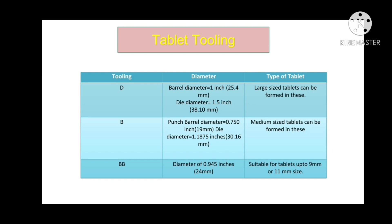Tooling used in tablet preparation is of three types — D, B, and BB — depending upon the type of tablet we want to prepare. Starting with D tooling: the barrel diameter is 1 inch, the die diameter is 1.5 inches, and large size tablets can be formed with this tooling.